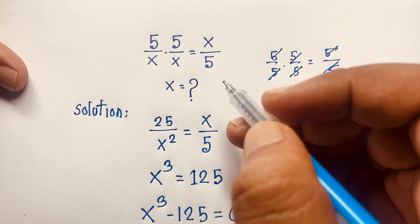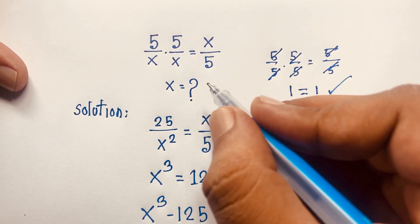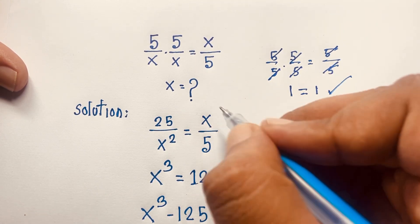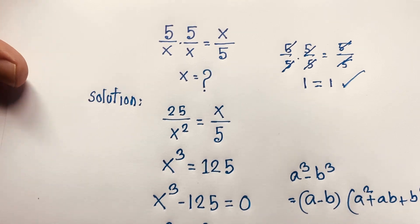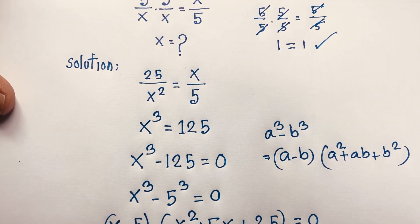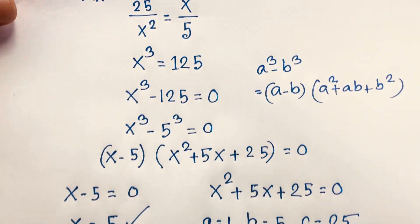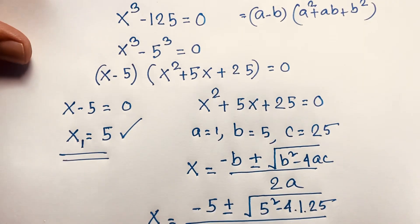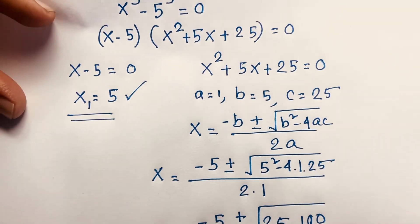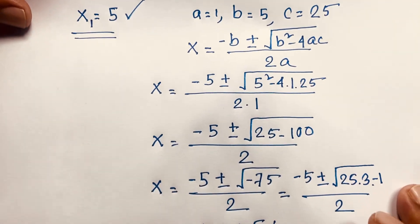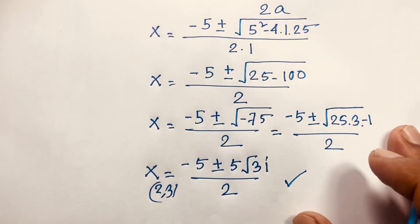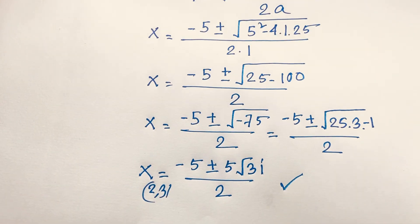So x equals 5 is our final answer for this junior math problem. Thank you all. If you enjoyed this video, please subscribe to my channel for other interesting videos. Goodbye, take care.